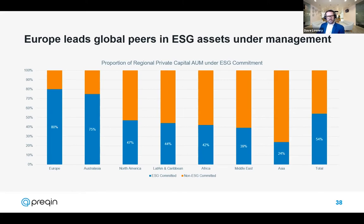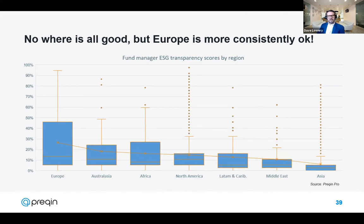Looking at ESG now — this is a top-level insight into the share of AUM under ESG commitments. It's clear that Europe and Australasia really lead the pack, but ESG commitments are somewhat binary and opaque. Within Prequin, we've been deepening our monitoring of ESG efforts and have started looking at individual documents that support ESG claims. From this work, we've developed an ESG transparency score based on the number of documents available and a number of transparency measures. Interestingly, North America ranks third by ESG commitments but fourth by transparency score.